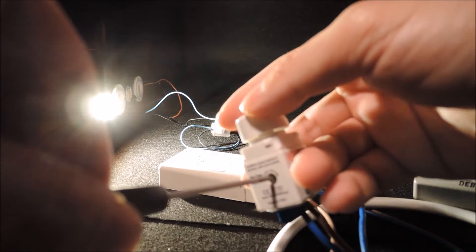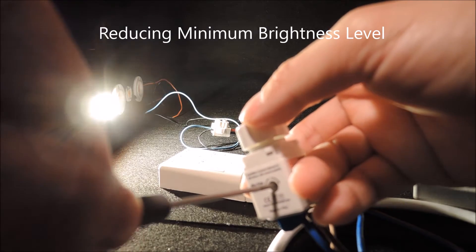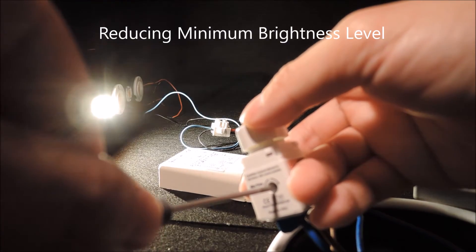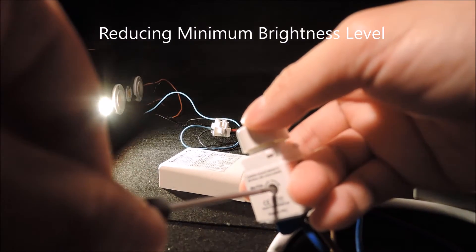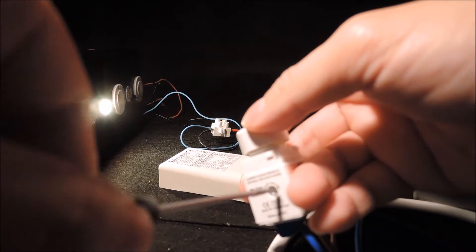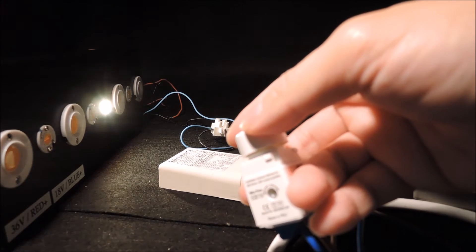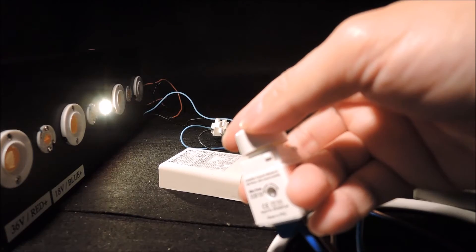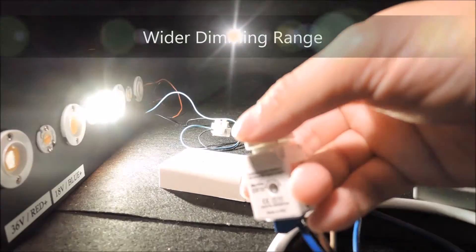Similarly, adjusting it downwards, you can see the light output is strategically being reduced. After that, once again, you'll find the new dimming range that's wider than before.